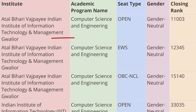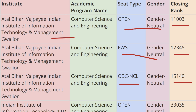First in the list we have IIIT Gwalior. As you can see on screen, for Open category gender neutral, the cutoff rank is 11,003 for Computer Science. For EWS category, the cutoff rank is 12,345, whereas for OBC-CL the cutoff rank is 15,140.